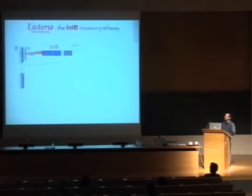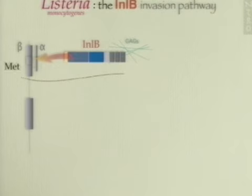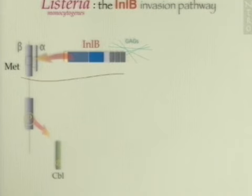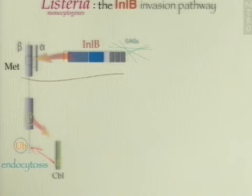We have shown in the past that InlB can interact through its GW domain with glycosaminoglycans of the extracellular matrix. However, the main signaling receptor for InlB is MET, which is the hepatocyte growth factor receptor. We have shown that InlB mimics many of the signaling pathways activated by the natural ligand of MET, which is HGF. For example, upon interaction with InlB, MET, which is a tyrosine kinase receptor, becomes phosphorylated and triggers the recruitment of several adapter proteins. One of these molecules is Cbl, which is an ubiquitin ligase that can induce ubiquitination of MET and its internalization by endocytosis.